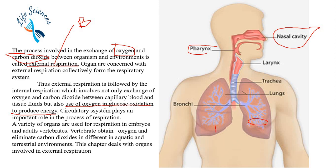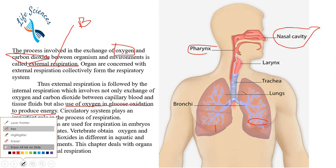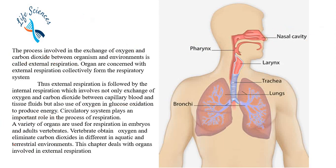The circulatory system plays an important role in the process of respiration. The circulatory system is the main carrier of oxygen — oxygen moves throughout the body bound to hemoglobin in the blood, and hemoglobin also brings back carbon dioxide. So the circulatory system plays a major role in respiration.